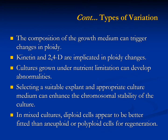In addition, the composition of the growth medium can trigger changes in ploidy. For example, both kinetin and 2,4-D are implicated in ploidy changes, and cultures grown under nutrient limitations can develop abnormalities. Selecting a suitable explant and an appropriate culture medium can therefore enhance the chromosomal stability of the culture. However, high variation of ploidy in cultures does not always lead to high frequencies of somaclonal variation in regenerated plants, because in mixed cultures, diploid cells appear to be better fitted than aneuploid or polyploid cells for regeneration, as they are more likely to form meristems.